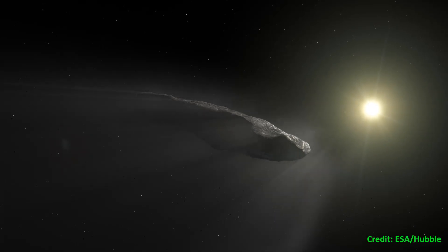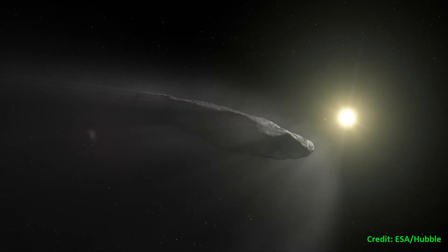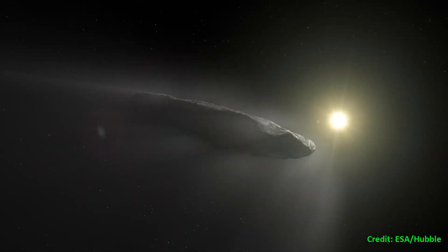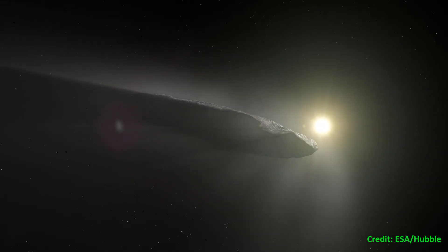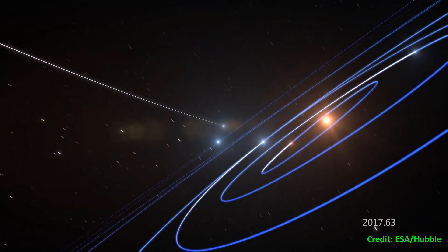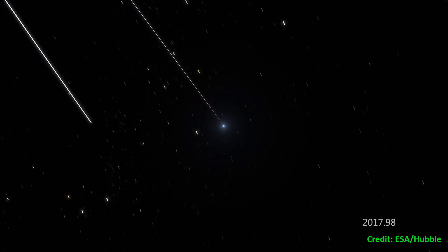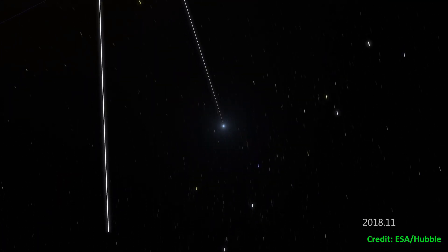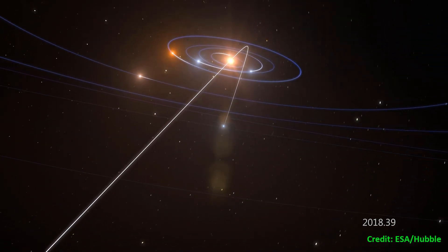The telescope has also captured observations of some special interstellar visitors. In 2018, Hubble studied Oumuamua, the first interstellar object discovered in the solar system. In cooperation with other ground-based telescopes, it was determined that the object was likely a comet and was moving away from the Sun faster than previously expected.